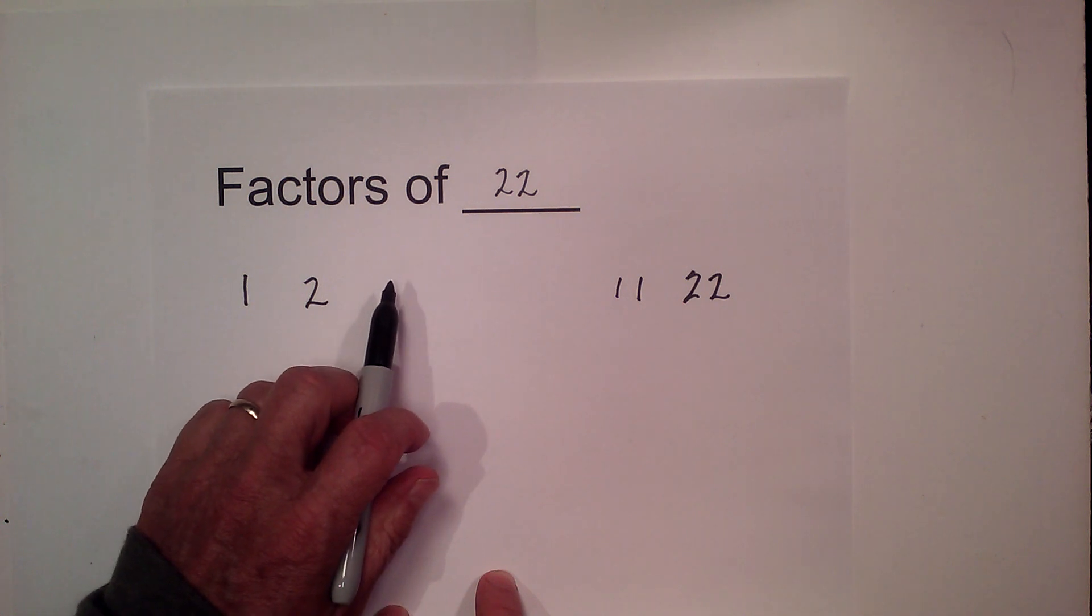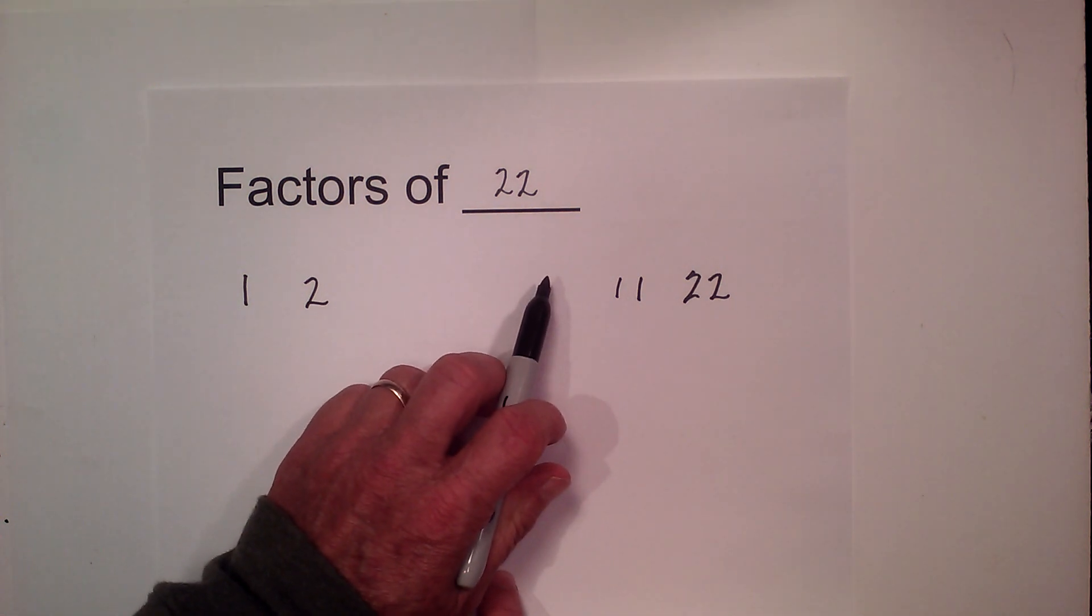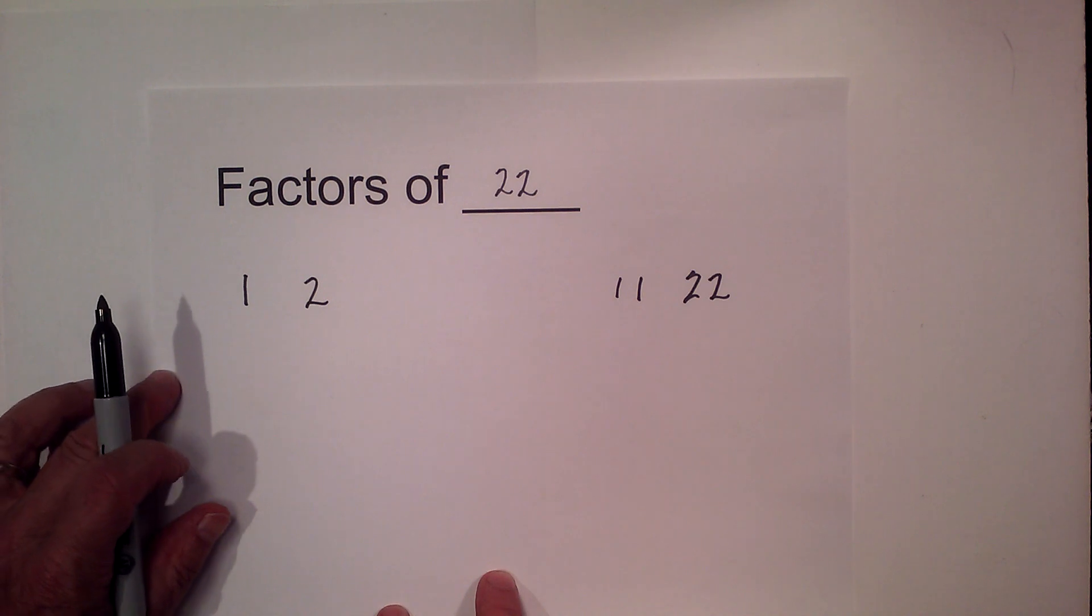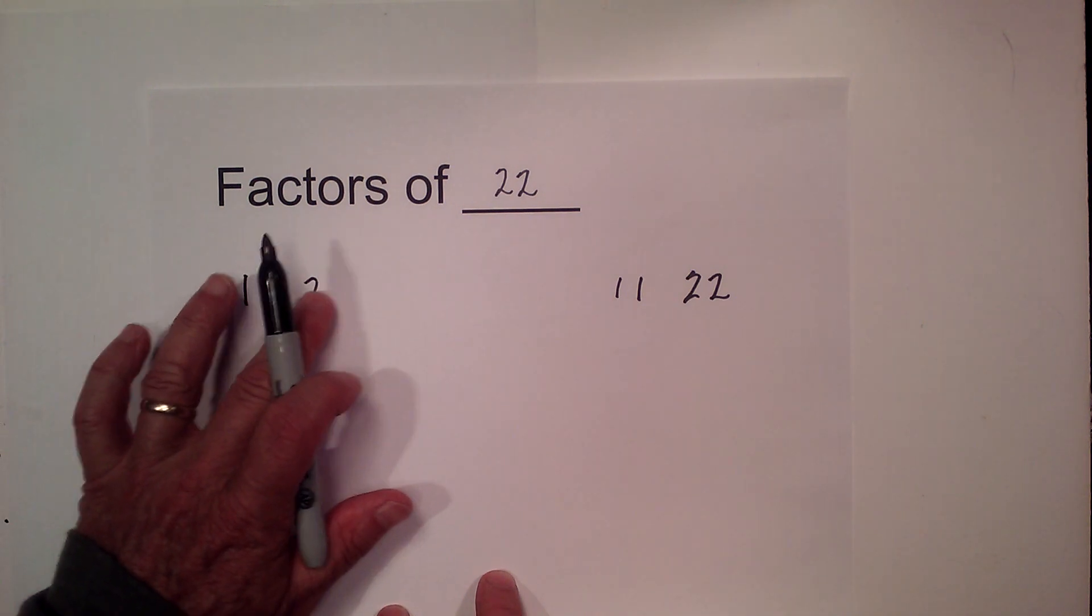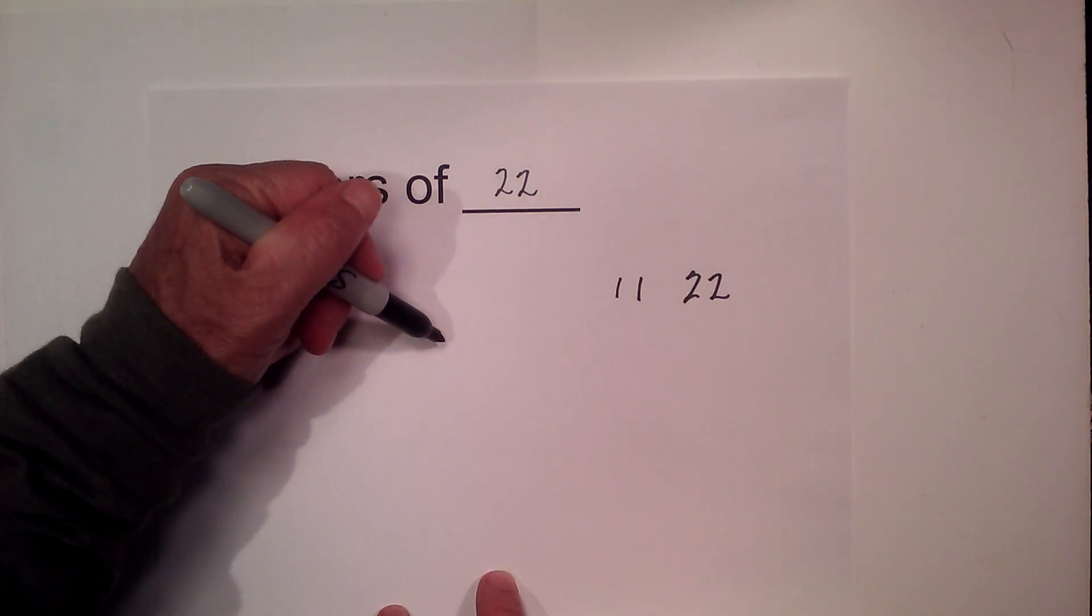3 will not go in, nor does 4, 5, 6, 7, 8, 9, or 10. So the factors of 22 are 1, 2, 11, and 22. And if you want these in pairs: